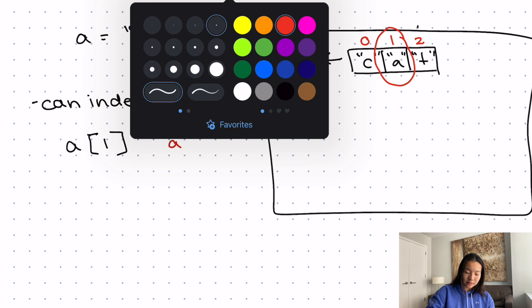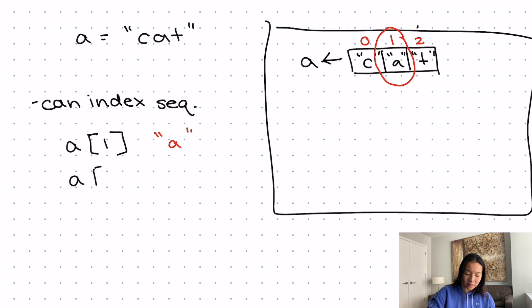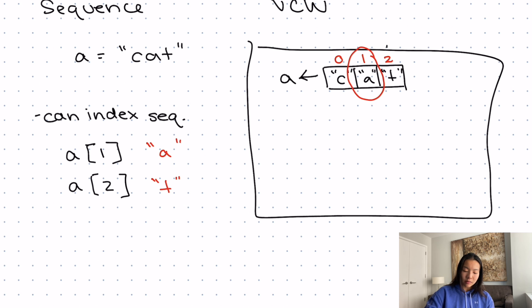If I had asked for a at index two, then this would give me t. And remember that I can change this variable name to whatever I want. So I could have said this is var, and this could have been the name over here. So then var one and var two.